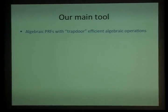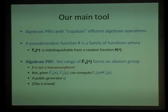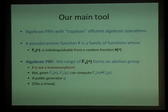The main tool we use is a new primitive we call an algebraic PRF with trapdoor efficiency. This is a pseudorandom function, but given certain secret information about its key, it is possible to compute algebraic operations related to the function very efficiently. A pseudorandom function is indistinguishable from a random function when the adversary is given an oracle to either the random function or the pseudorandom function with a randomly sampled key. By 'algebraic PRF,' all I mean is that the range of the pseudorandom function forms an abelian group — essentially any PRF outputting a bit string satisfies this, with the group being all strings of that length.